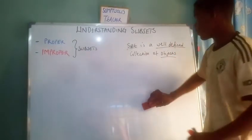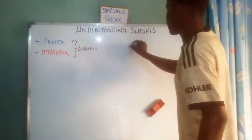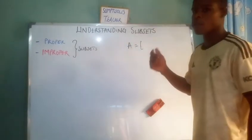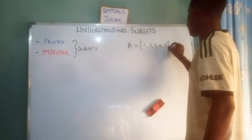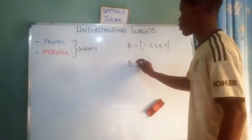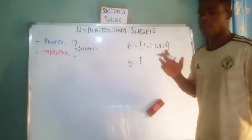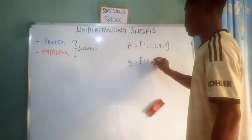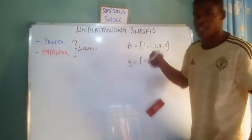Now, a subset is just a part of a set. For example, if we have set A defined as the numbers one to five — that is, {1, 2, 3, 4, 5} — then a set B is said to be a subset of A if B consists of some elements of A, or every element of A.